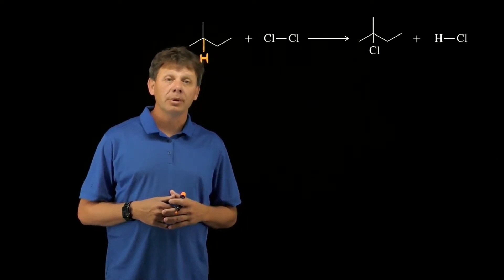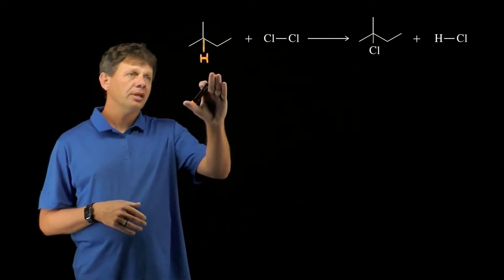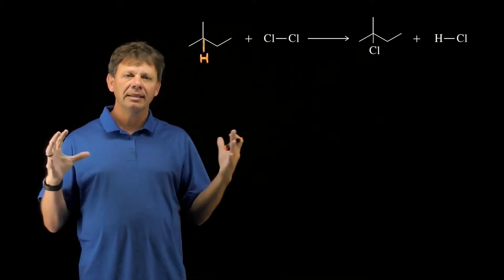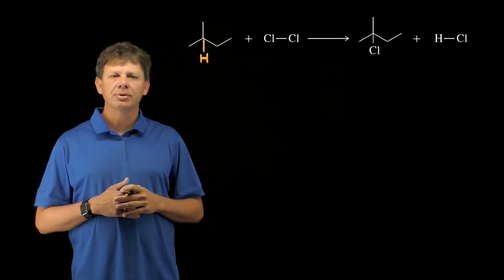This assessment asks us to do three things: use bond association energies to calculate delta H, estimate delta S, and then calculate delta G assuming a temperature of 298.